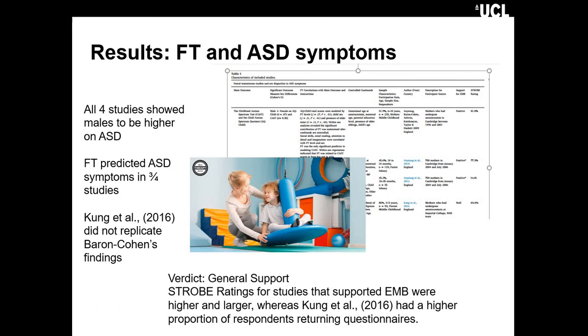There were four studies in total that looked at autism and FT. All four studies found the heightened prevalence or level of autism symptoms among males compared to females. Fetal testosterone was found to predict autism symptoms in three out of four studies. The only study that did not replicate that mediation was from outside Baron Cohen's group. Interestingly, they were from the same university, probably headed by the researcher Kung.